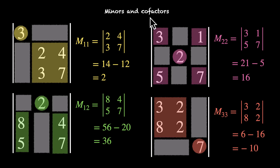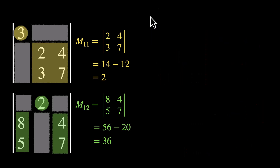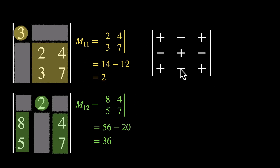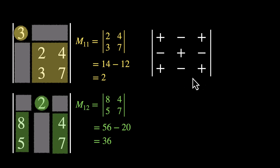Let's also learn about cofactors. For cofactors, we take the values that we got in this process — the values of minors — and then we add signs to those values. We add signs in this pattern: on the top left we have plus, then minus, plus, minus, plus, minus, plus, minus, plus. So we can see that these signs alternate.